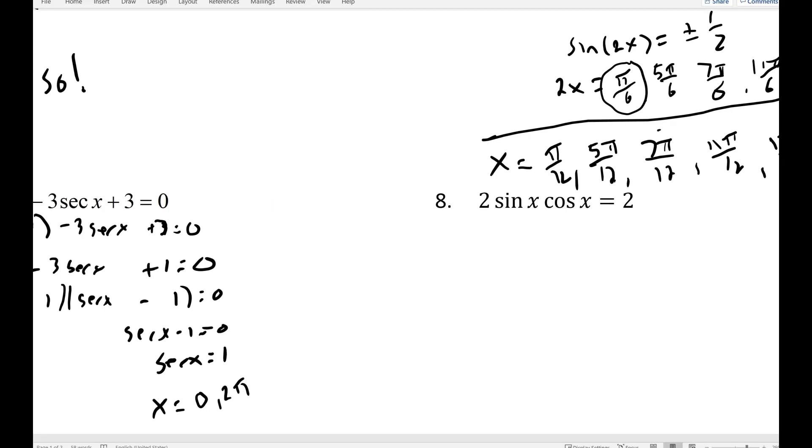So number 8 is kind of a tricky one. You're not going to have to do a bunch of math. You just got to do math in your head and think about this. If I divide both sides by 2, I get sine x times cosine x equals 1. So I'm asking when is sine times cosine equal to 1? Now keep in mind that sine never gets bigger than 1 and cosine never gets bigger than 1. So the only way that sine times cosine would be equal to 1 would be if they're both 1. And sine and cosine are never 1 at the same time. So this would be a no solution.